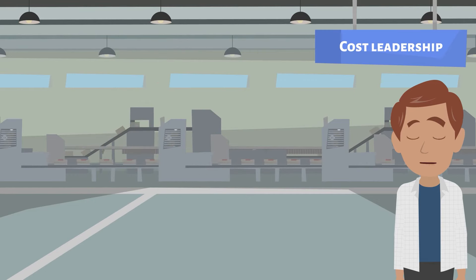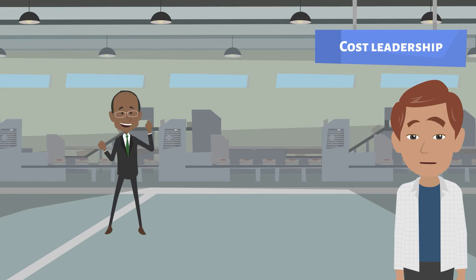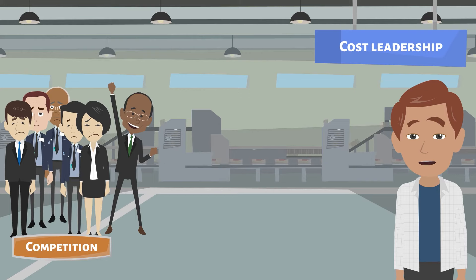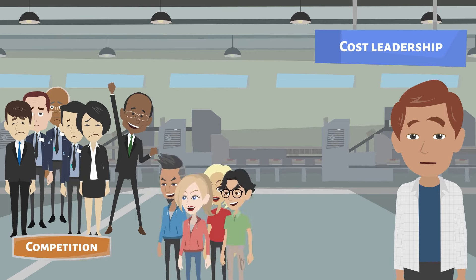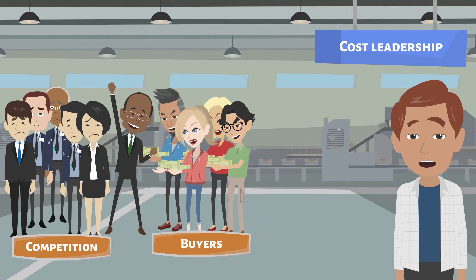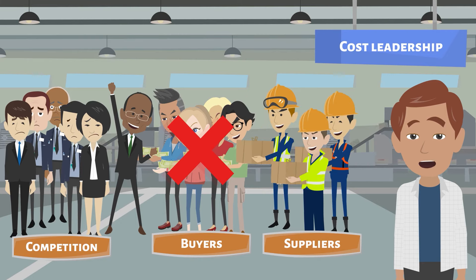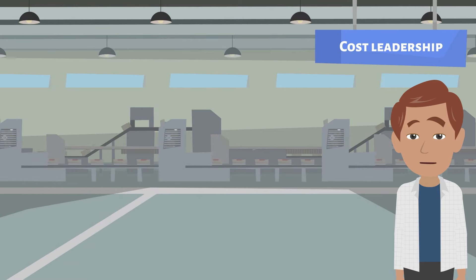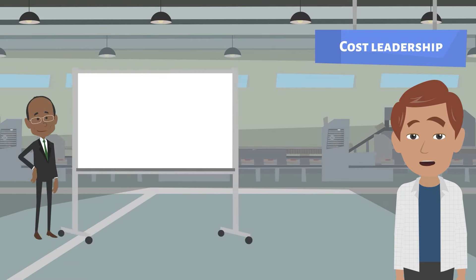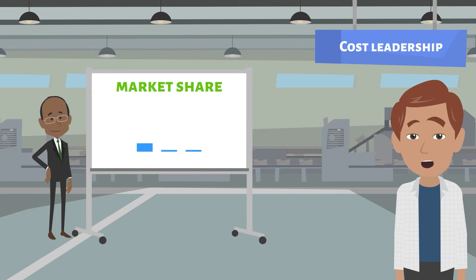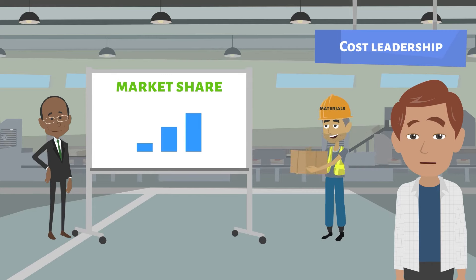By choosing the cost leadership strategy, an organization gains above average profit despite strong competition in the market. This strategy protects the company from the bargaining power of buyers who are able to force lowering of prices only to the level of the next competitor, and also from the power of suppliers owing to the greater flexibility when increasing input costs is necessary. To achieve cost leadership, a company must have a significant market share or other advantages such as favorable access to raw materials.